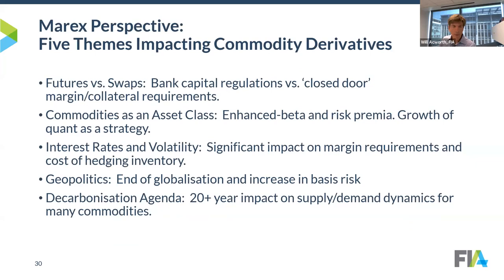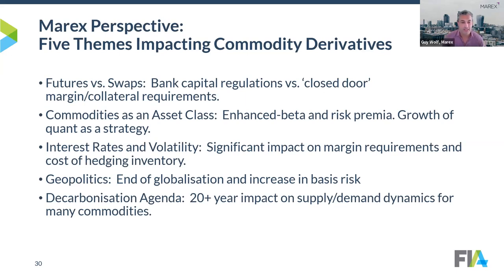That brings us to commodity derivatives. The first slide summarizes key themes. Guy will now take over to go through the themes he sees across those markets, then we'll dive into energy, metals, and agriculture. There's an extraordinary amount of fairly major factors going on in commodities — both positive and negative — impacting market volumes. Some are applicable to the financial futures world as well, but commodities are often impacted slightly differently. There are five big themes, and I've summarized them.